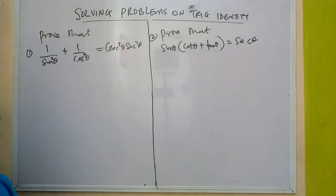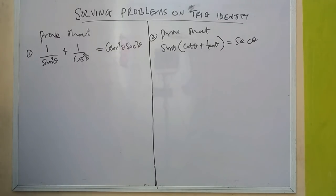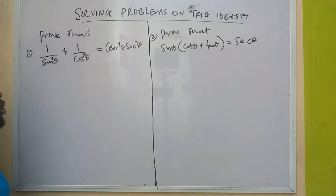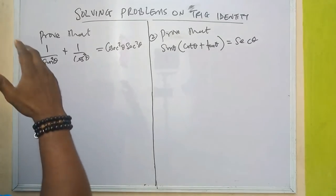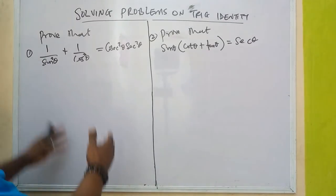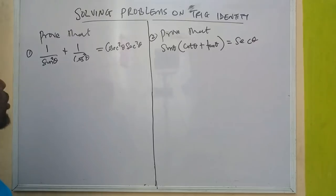Now we are going to be looking at this from question 1. Question 1 states: prove that 1/sin²θ plus 1/cos²θ equals cosec²θ · sec²θ. We are going to be using the identities we have on the board.